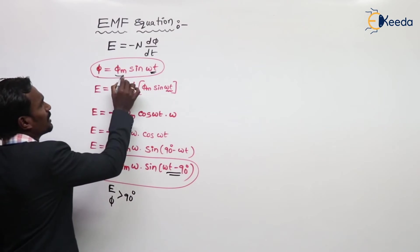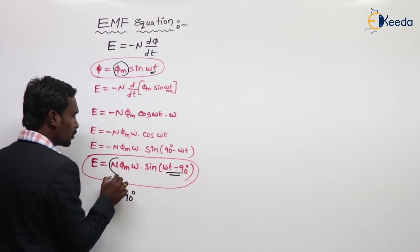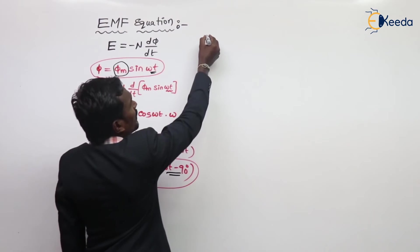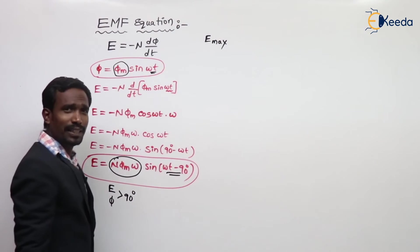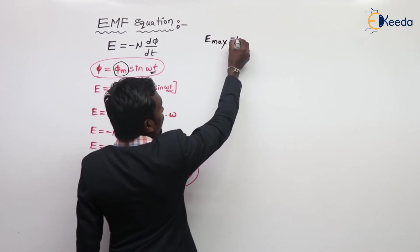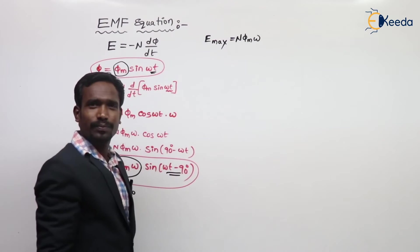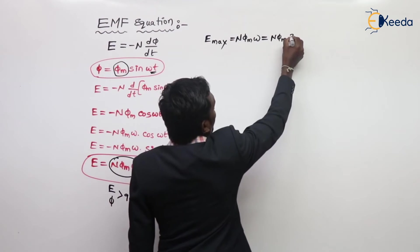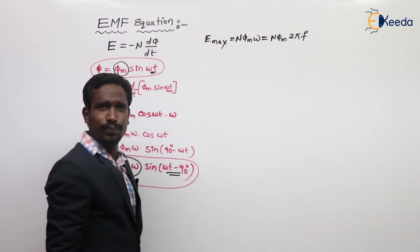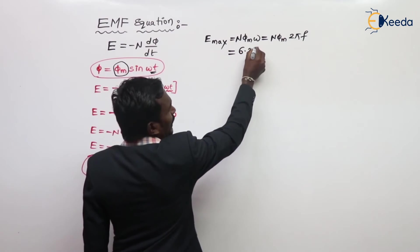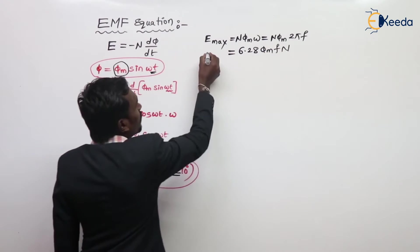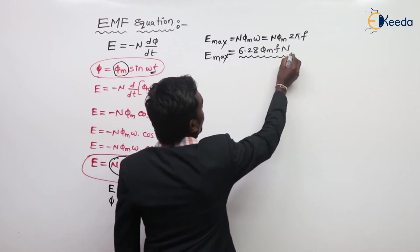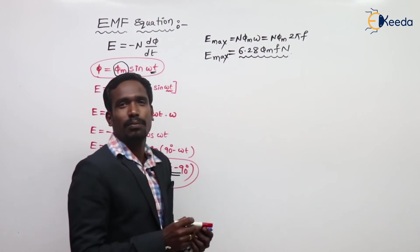Here φ = φm sin ωt and E = Em sin ωt. The maximum EMF induced in the transformer is Em = N φm ω = N φm × 2πf = 6.28 × φm × f × N. This is our maximum EMF induced in the transformer.